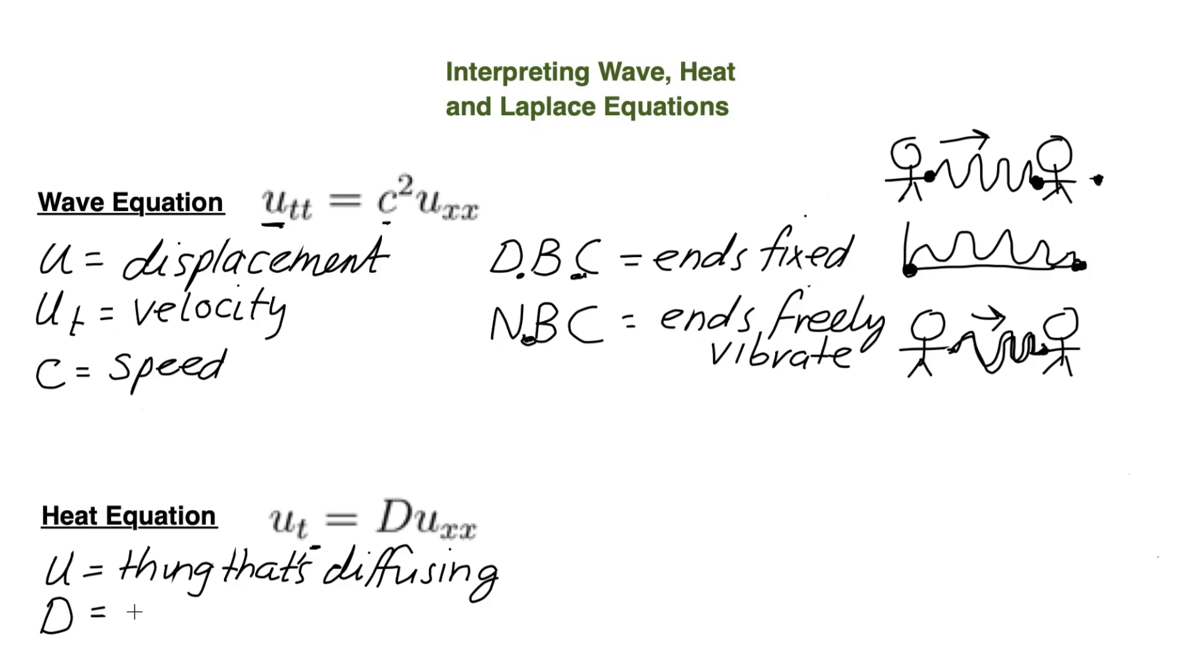D is the diffusivity constant. Most materials have a diffusivity constant and it's just a scalar like speed.